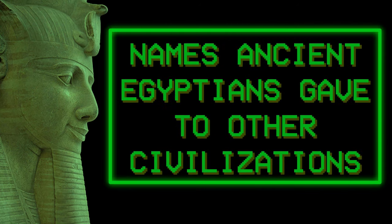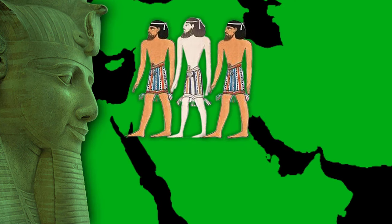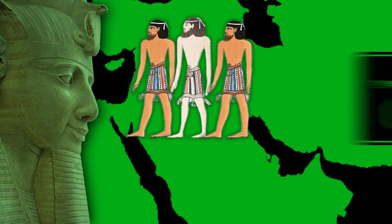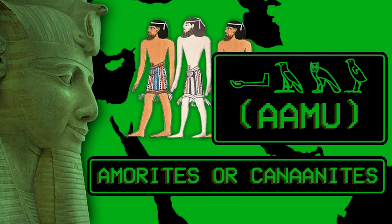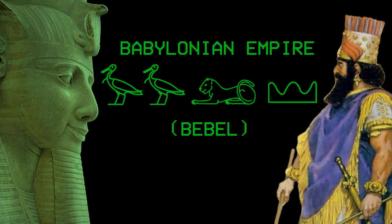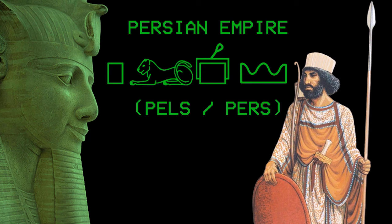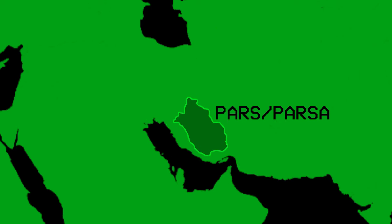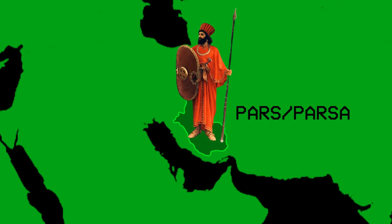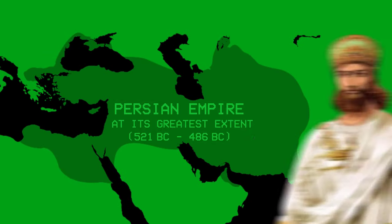As for the names that the ancient Egyptians gave to other civilizations, we will find that they called the Semitic peoples neighboring them in West Asia in general the name Amu, and historians believe that this name may refer to the people of the Amorites or the Canaanites in the Levant and the Mesopotamian region. The ancient Egyptians also called the Babylonian Empire Bebel and the Persian Empire Pels or Pers, a name derived from the name of the Pars or Parsa region located in southwestern Iran today, the region from which the most powerful ancient Persian tribes emerged and from which came the kings who ruled the Persian Empire.